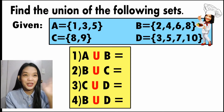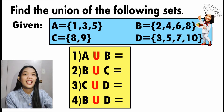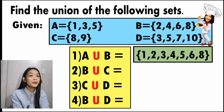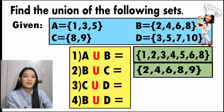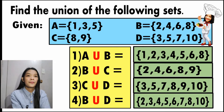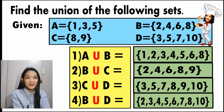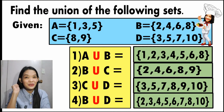Let us check your answers. Number 1 — combine the elements. The answers are 1, 2, 3, 4, 5, 6, 8. Number 2 — the answers are 2, 4, 6, 8, and 9. Number 3 — 3, 5, 7, 8, 9, and 10. And for the last one — 2, 3, 4, 5, 6, 7, 8, and 10. So are your answers correct? Well, if yes, then very good.